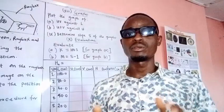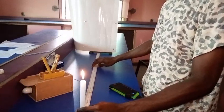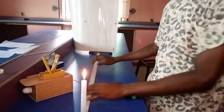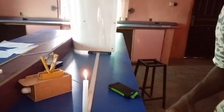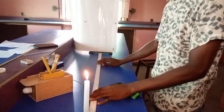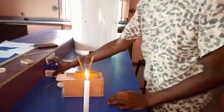The illuminating object we are using is a candle. I have my meter rule for measurement of length, my lens on the lens holder, and the screen where the images will be captured. Now let's set the distance between the object and the screen to 100, which is one meter. I'll bring the lens out gently and place it in between.